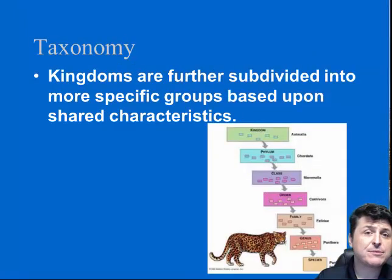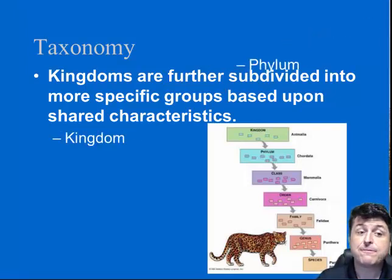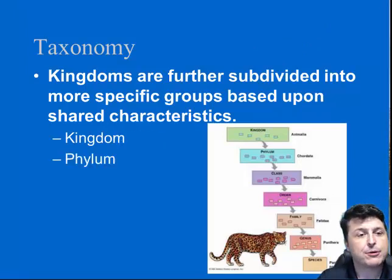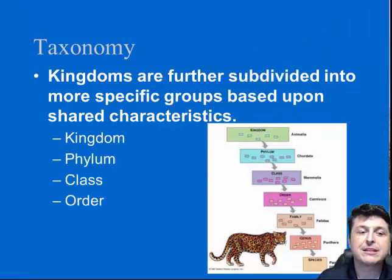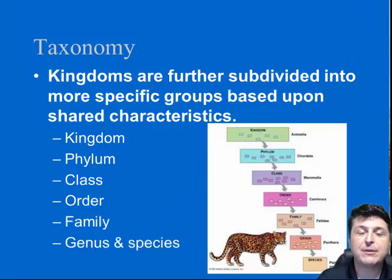The kingdoms are then further subdivided into more and more specific groups based upon shared characteristics. So kingdoms are broken down into phylums, which are broken down into classes, which are broken down into orders, then families, and then we have genus and species. These are our different levels of taxonomy.